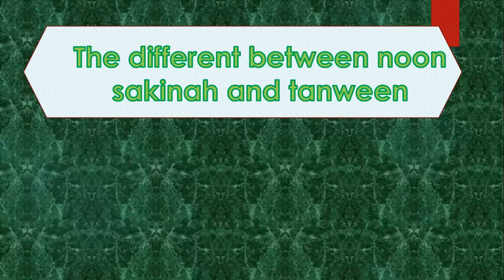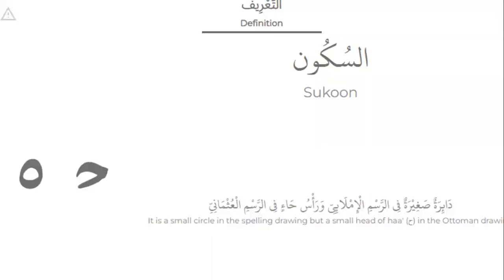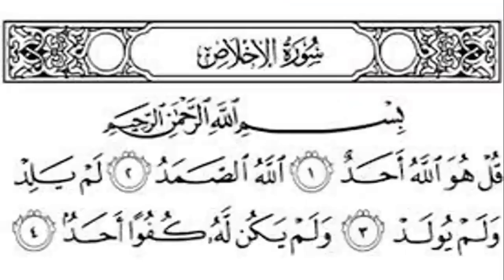Sukun means it's a small circle in the spelling drawing, but a small head of the letter H in the Osman drawing. Osman drawing means in the Qur'an. For example, in Surat al-Ikhlas, can you find words with Sukun?